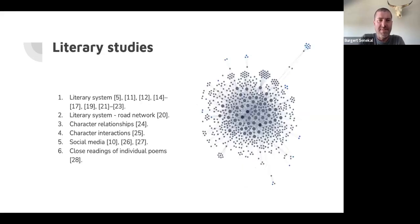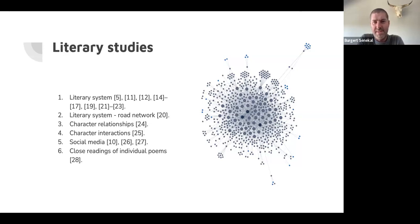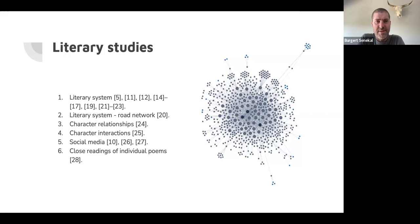Most of my applications are in literary studies. The first thing I looked at was the literary system, which ties in with Even-Zohar's polysystem theory. It basically looks at relationships between role players like authors, books, publishing houses, critics, and scholars. If you do a micro level study, you can identify the most important authors, critics, and publishing houses. At the moment I'm also working on core-periphery structures, which allow you to identify the core of the literary system.